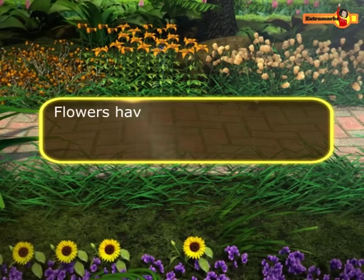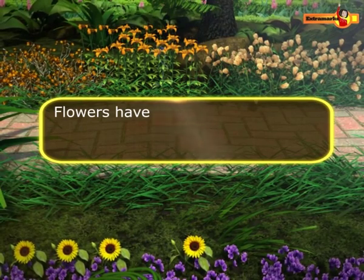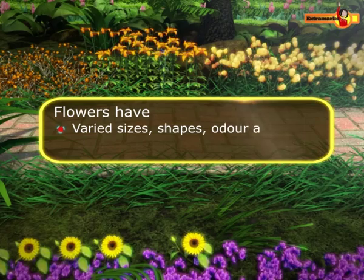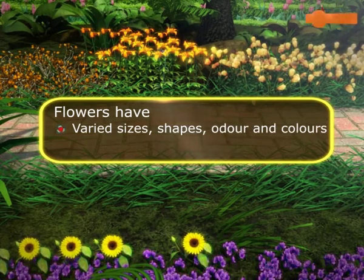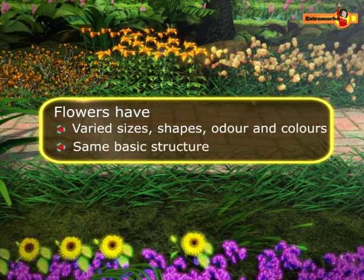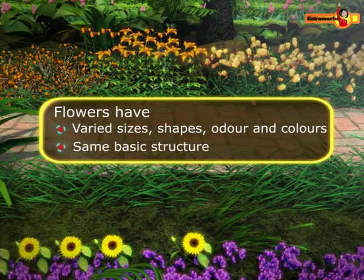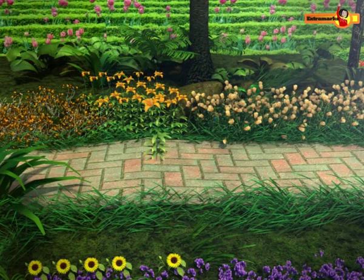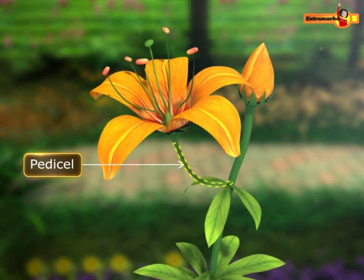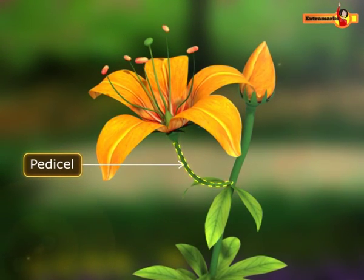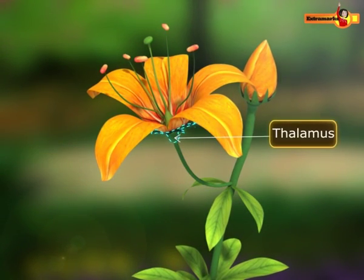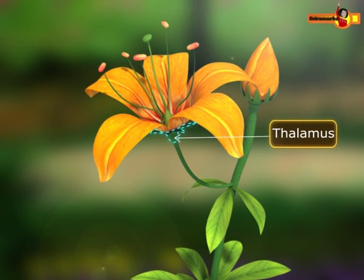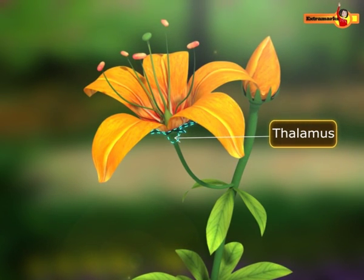Although flowers have astonishingly varied sizes, shapes, odour and colours, they still possess the same basic structure. A typical flower has a pedicel, which is the stalk that holds the flower, and the thalamus, which is an enlarged part of the stalk that bears all the parts of the flower.